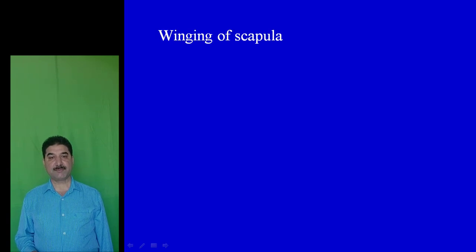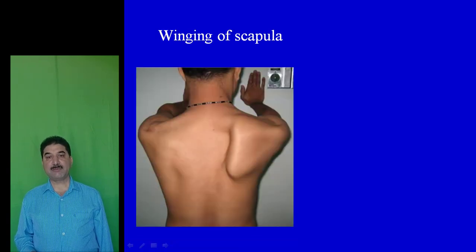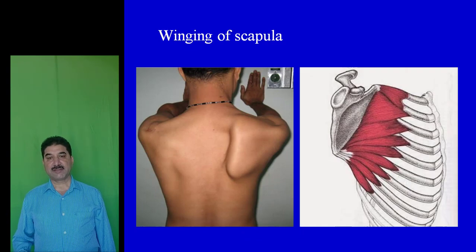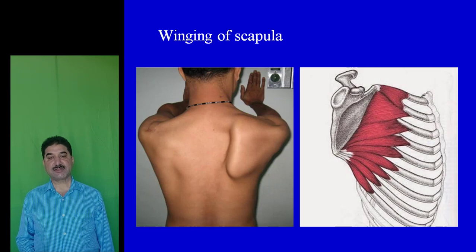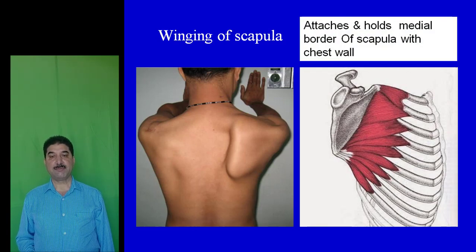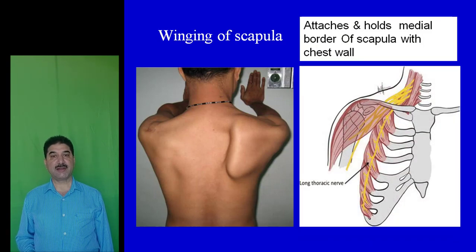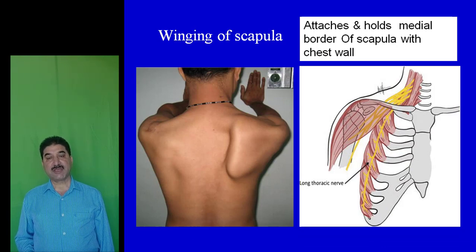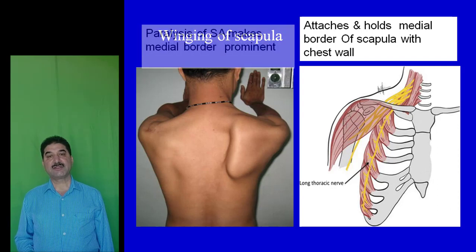Winging of scapula is a condition in which the medial border of the scapula becomes prominent. Serratus anterior is attached to the medial border of the scapula and holds it with the chest wall. This muscle is supplied by the long thoracic nerve of Bell. Paralysis of this muscle makes the medial border prominent, which is called winging of scapula.